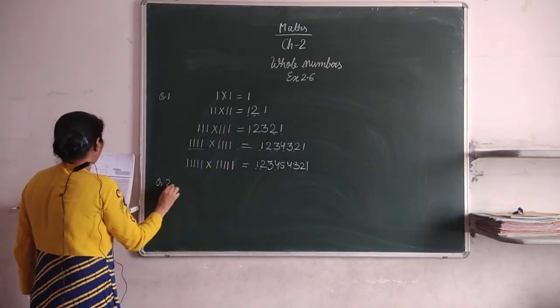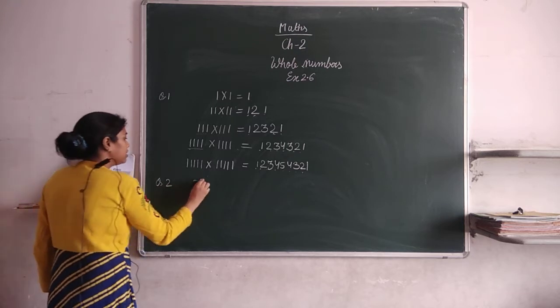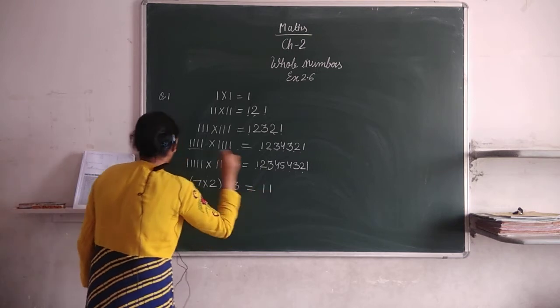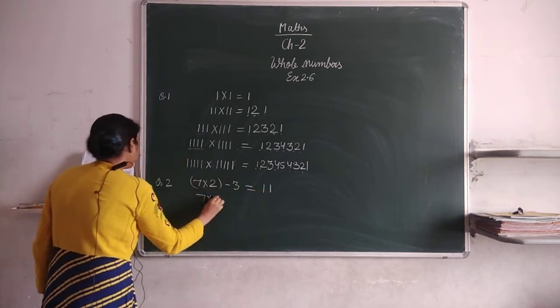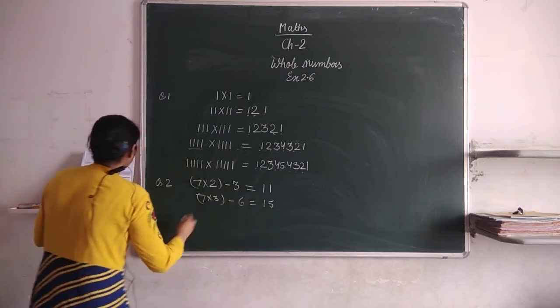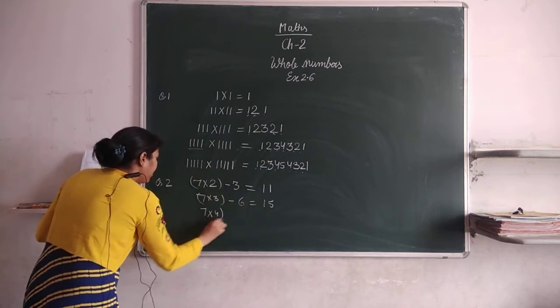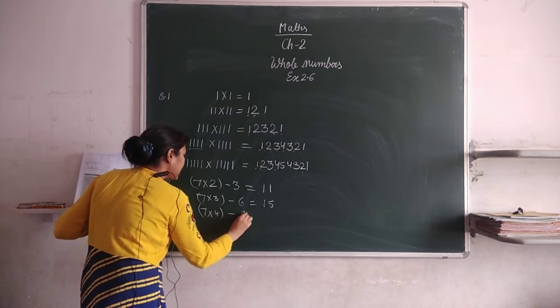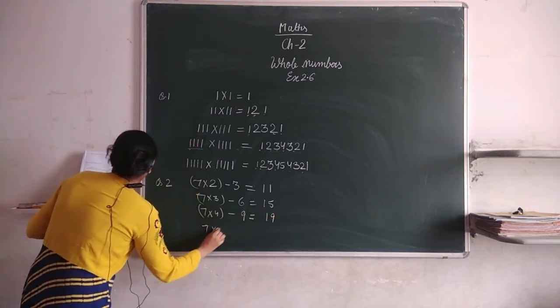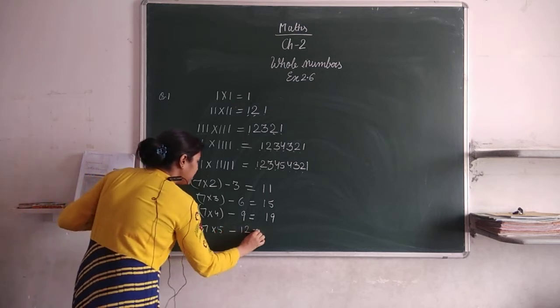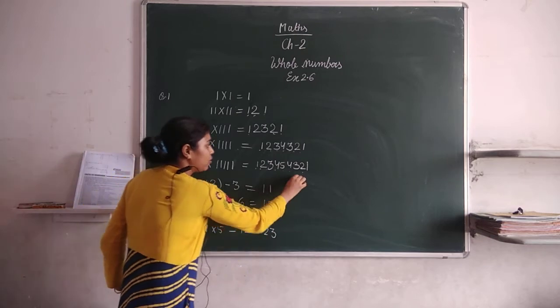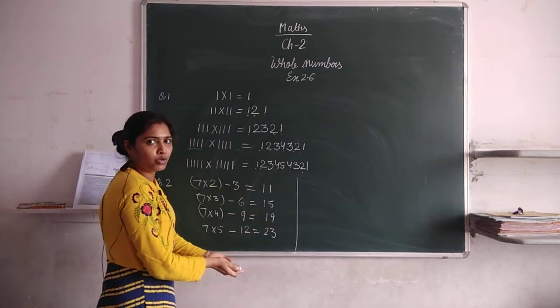Now question 2. In this question, 7 multiply by 2 minus 3 is given to you 11, 7 multiply by 3 minus 6 is given to you 15, 7 multiply by 4 minus 9 is equal to 19, 7 multiply by 5 minus 12 is equal to 23. And same way you have to write next 4 steps.